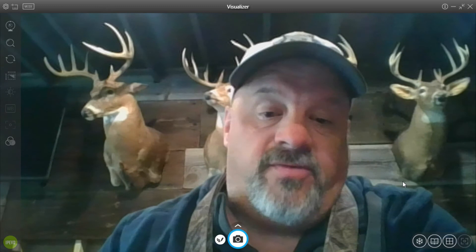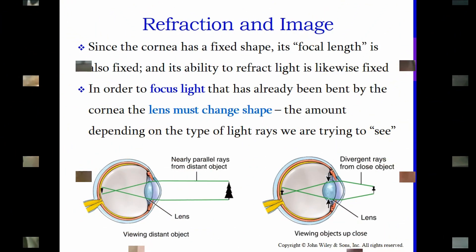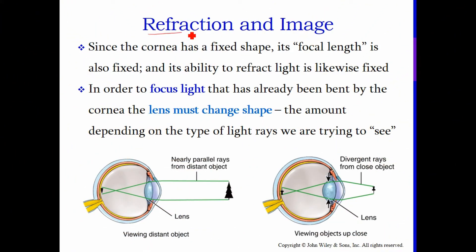Let's pick up where we left off: refraction and image. Refraction means the bending of light. Since the cornea has a fixed shape, its focal length is also fixed, and its ability to refract light is likewise fixed. Unless you have LASIK, your cornea is not going to change its thickness, so the amount of light bending it does never changes — it's fixed.